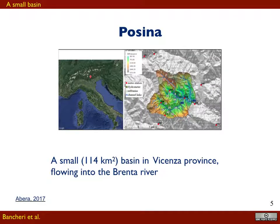The specific case we are dealing with is the Posina River Basin, which is a small basin in the north part of Italy, 114 square kilometers. This basin flows into the Bacchiglione River and subsequently into the Brenta River until the Adriatic Sea.